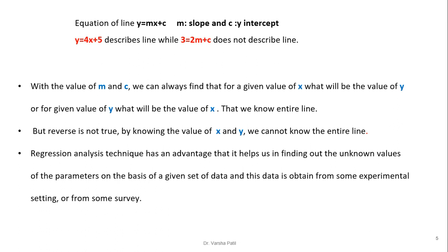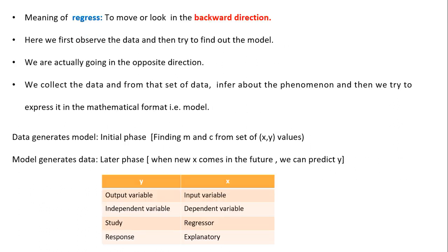Regression analysis has the advantage that it helps us find out unknown values of the parameters on the basis of a given set of data. This data is obtained from some experimental setting or survey — it is nothing but historical data or training data. Based on that, we find out the parameters. The meaning of regression is to move or look in the backward direction: we first observe the historical data, try to find out the relationship between the input and output, and then express it in a mathematical format as a model.